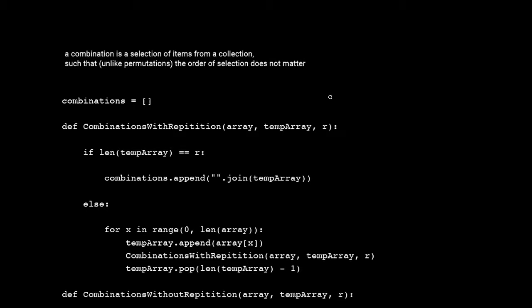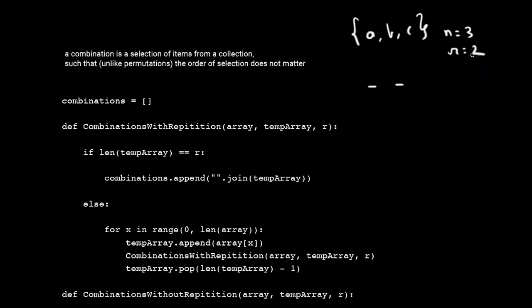So the order in which you select the items and place them in the bucket or in the line does not matter, unlike permutation. So let's take an example. Let's say you have three items: A, B, C — three items to select from — and you have to generate combinations of length two. So here N is equal to 3 and R is equal to 2.